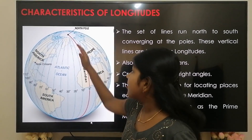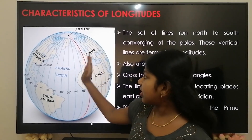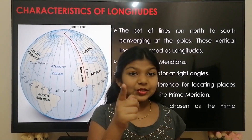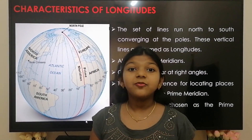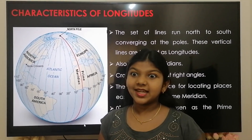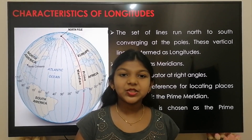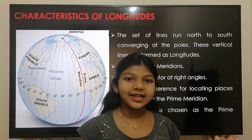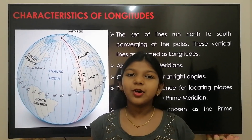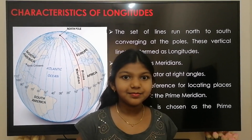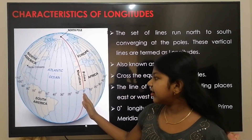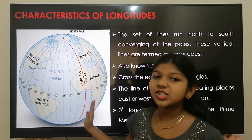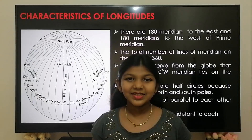The line of reference for locating places east or west is the prime meridian. For historical reasons, in 1884, the meridian passing through the Royal Astronomical Observatory in Greenwich, England was chosen as the prime meridian. So the 0 degree longitude is chosen as the prime meridian, which is also known as the Greenwich meridian.